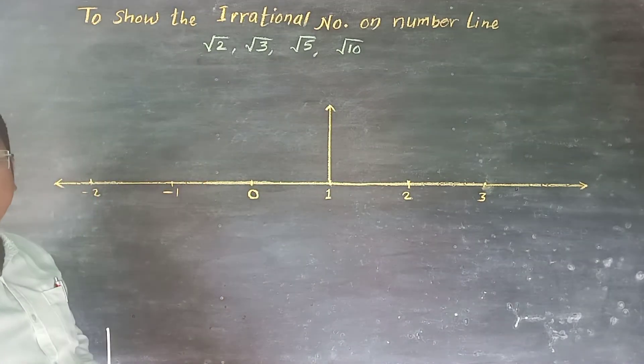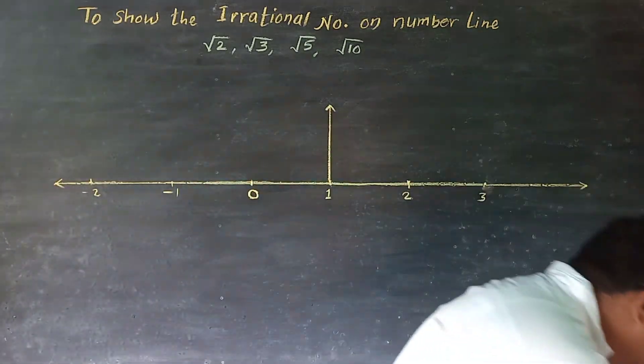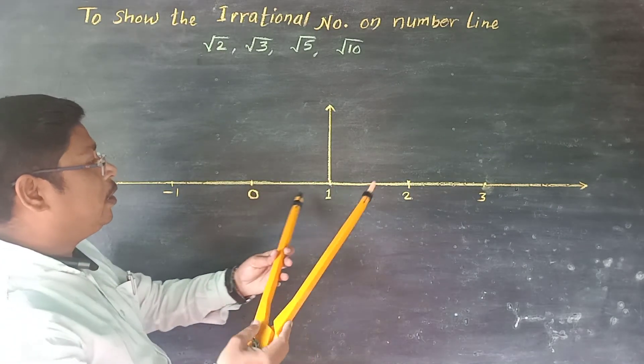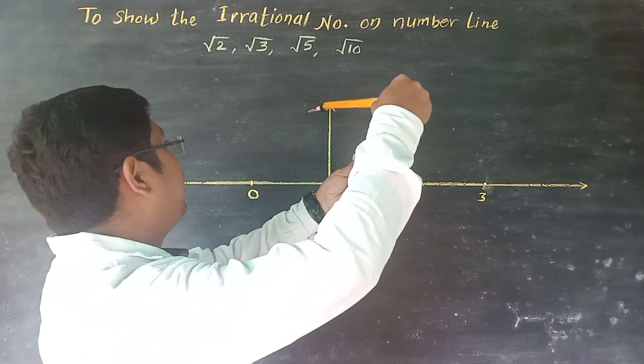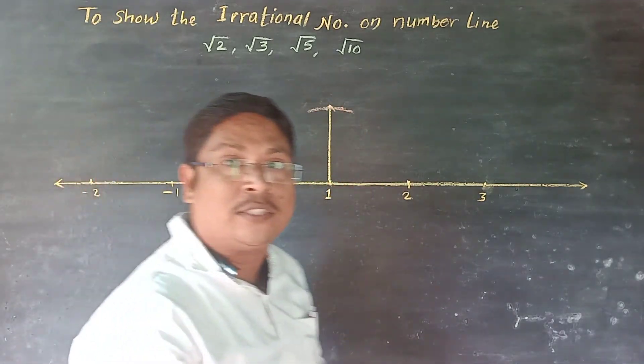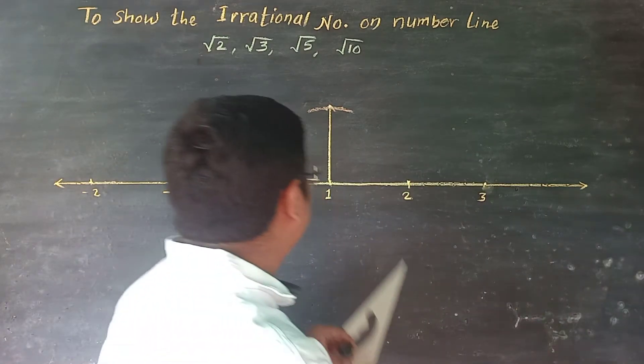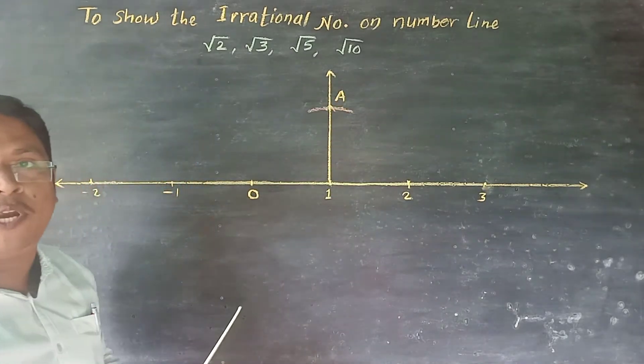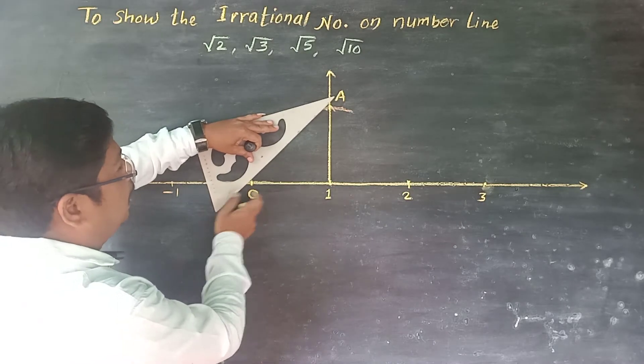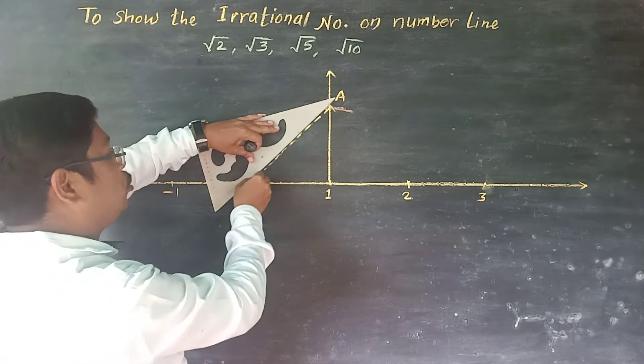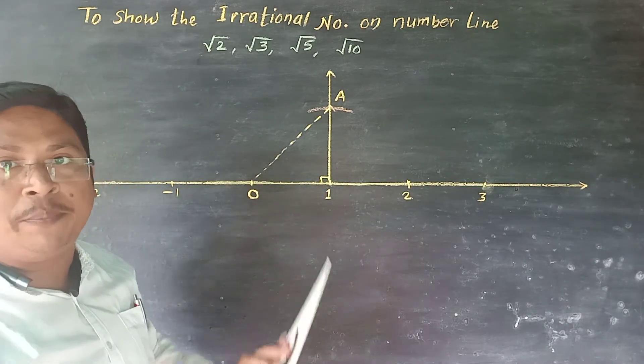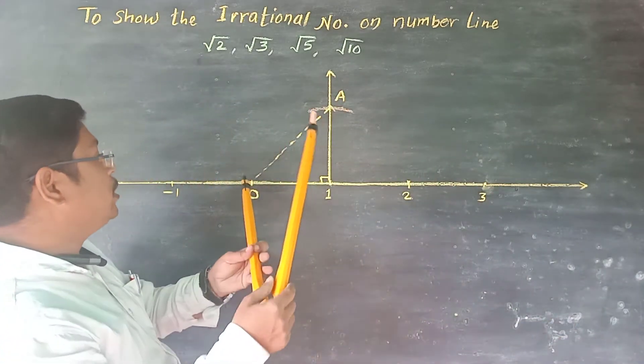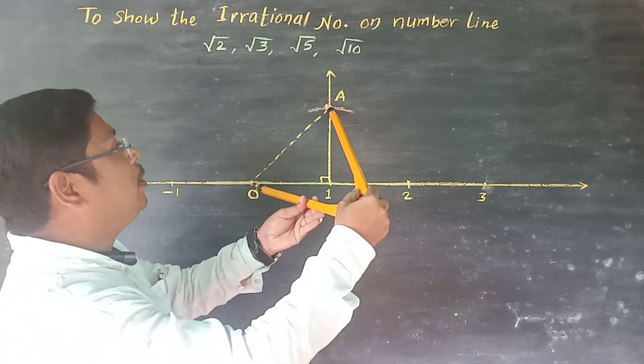Mark the distance as one unit, one unit. This creates a right triangle with sides of length one and one.